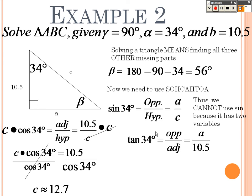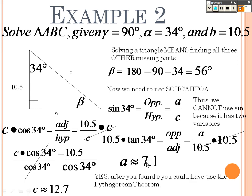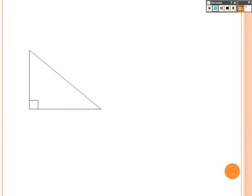And then we do tangent of 34. Tangent of 34 is opposite, which I don't know, over adjacent, which is 10.5. So, to solve this, I can multiply both sides by 10.5. And 10.5 times tangent of 34, it gives me 7.1. So, I now know one, two sides, and the angle. And yes, once I found this side, if I wanted to, I could have used the Pythagorean theorem to solve that. And for those who don't remember, the Pythagorean theorem is a squared plus b squared equals c squared. When we come back, we'll do example three.